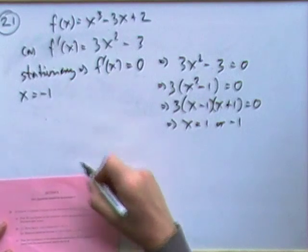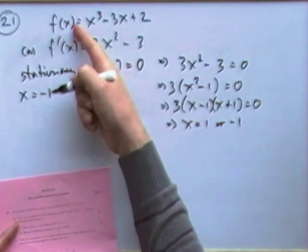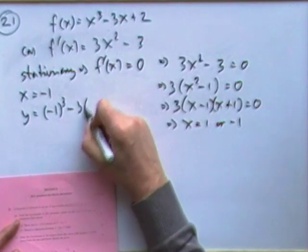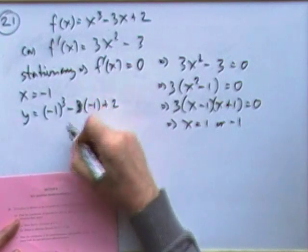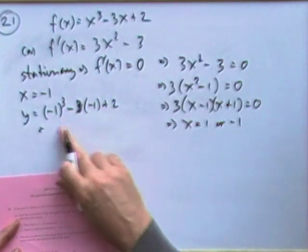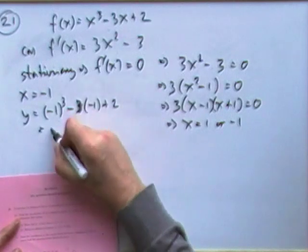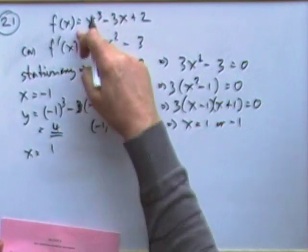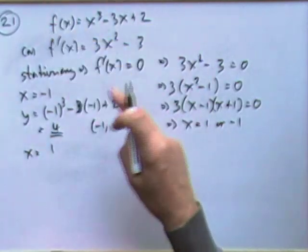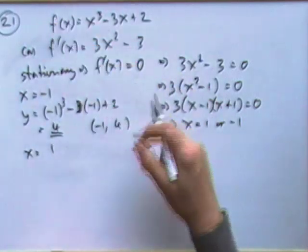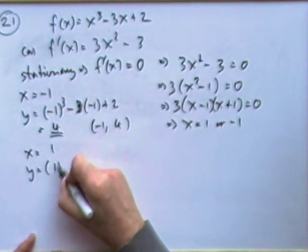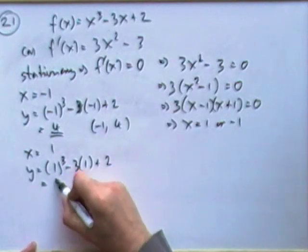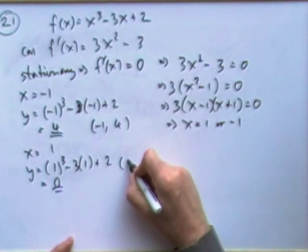If x equals negative 1, it wants the coordinates, so I need the y coordinate from the first equation. If x is negative 1, then y would be negative 1 cubed minus 3 times negative 1 plus 2, that's not a very good 3. So that's going to be negative 1 plus 3 plus 2, that'll be 4, so I've got the point negative 1, 4. If x is 1, f of x will be 1 cubed minus 3 times 1 plus 2, that's 3 take away 3 is 0, so the other point's at 1, 0.